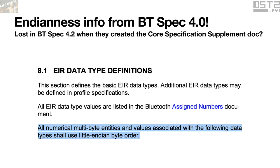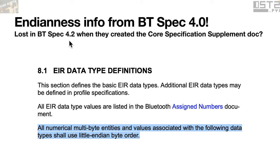Even when they put valid data there, they don't have consistency in terms of endianness. Sometimes they use the company ID big-endian, sometimes little-endian, and I see some vendors like Samsung and Apple who actually use both. I was really wondering why the spec didn't say what endianness to use. It turns out the Bluetooth spec 4.0 specifically said all numerical multi-byte entities shall use little-endian, but if you look at any spec from 4.2 onward — which is definitely the most common baseline used in the wild — if developers looked at that documentation, they wouldn't be told the right way to do it, and consequently people do it wrong.